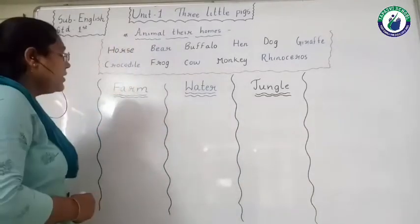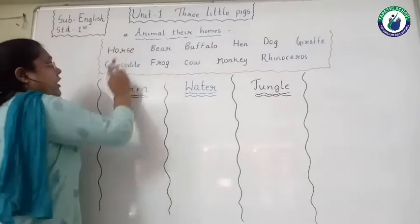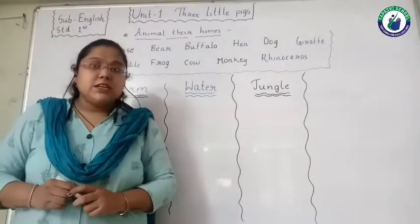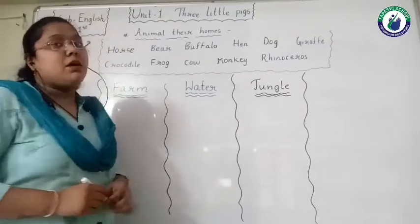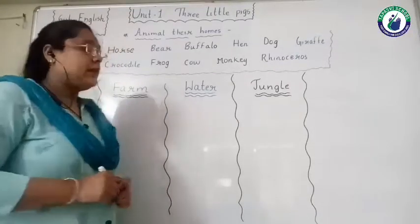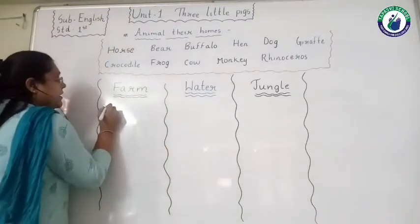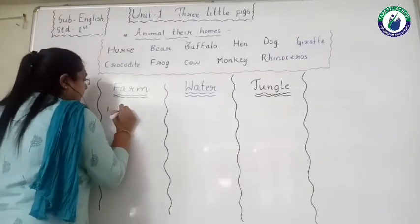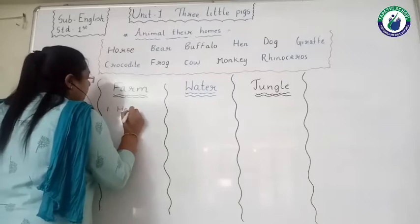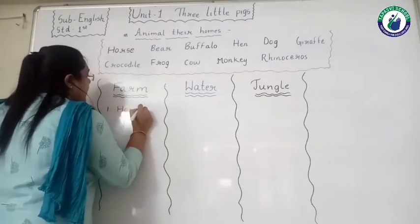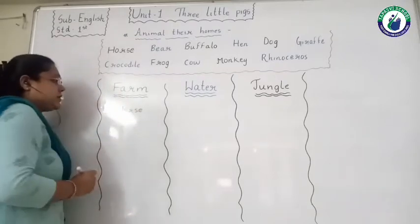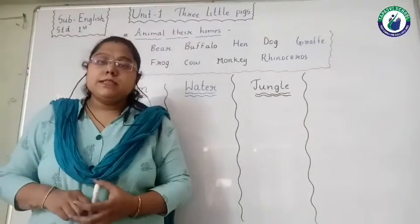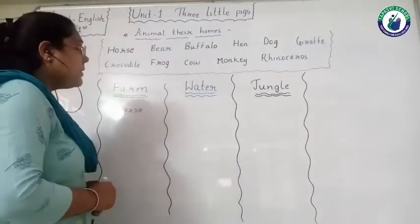Number one — horse. We can see a horse near us, so that is a farm animal, also called a domestic animal. So we will write horse in the farm animal column. H-O-R-S-E, horse. Horse means ghoda.